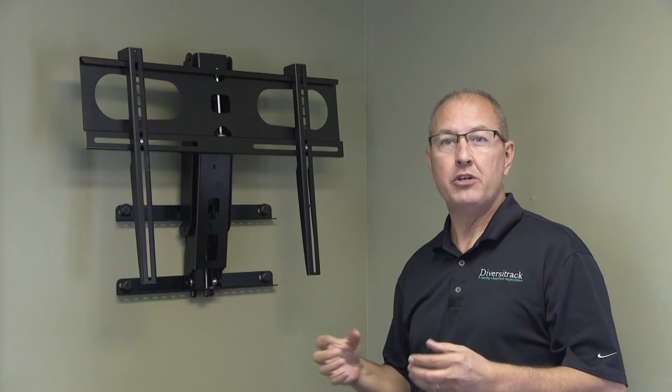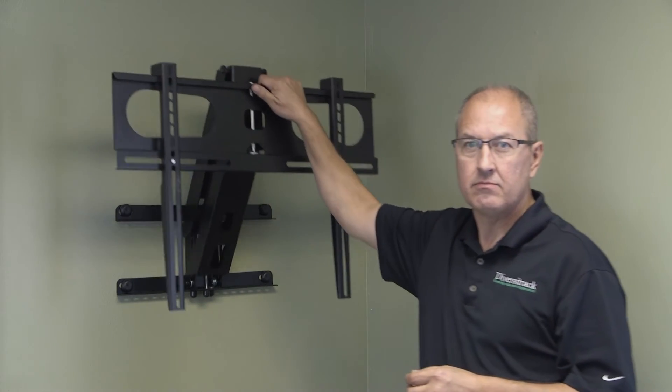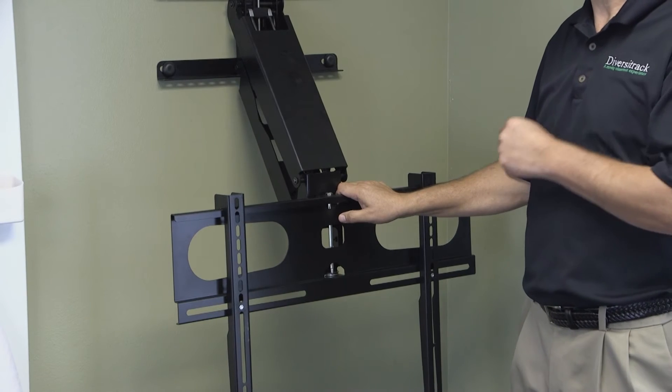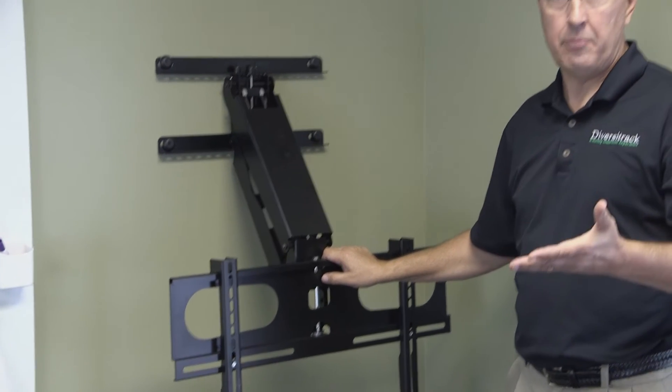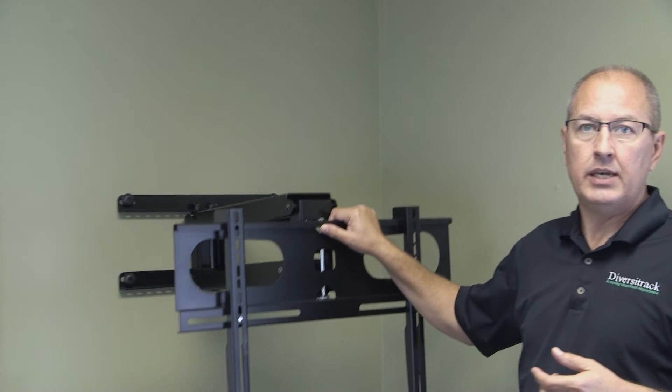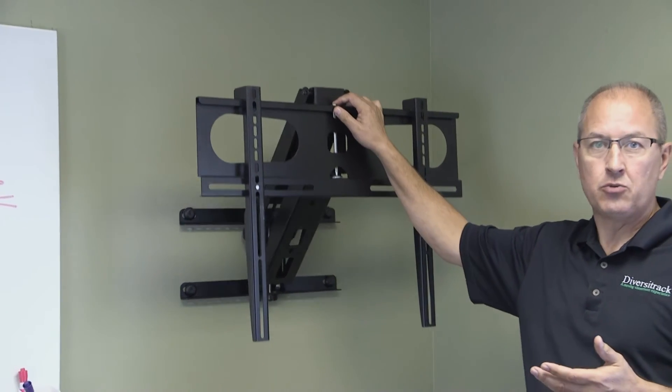Another version of Hovermount is Hovermount Lite. Hovermount Lite is single piston actuated, supports flat panel displays up to 70 pounds, and also has a 29 inch range of motion.